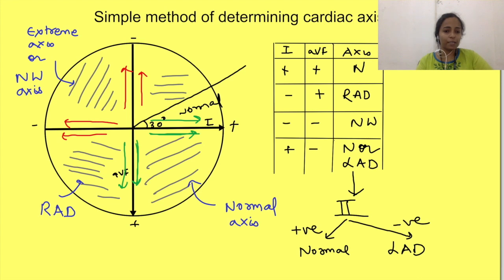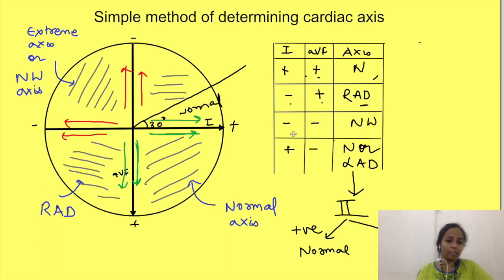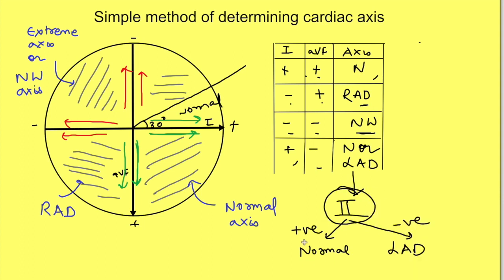To summarize: if both lead 1 and AVF are positive, it is normal axis. If lead 1 is negative and AVF is positive, it is right axis deviation. If both are negative, it is extreme axis. If lead 1 is positive and AVF is negative, look at lead 2 — if lead 2 shows a positive QRS complex, it is normal axis; if negative, it is left axis deviation.